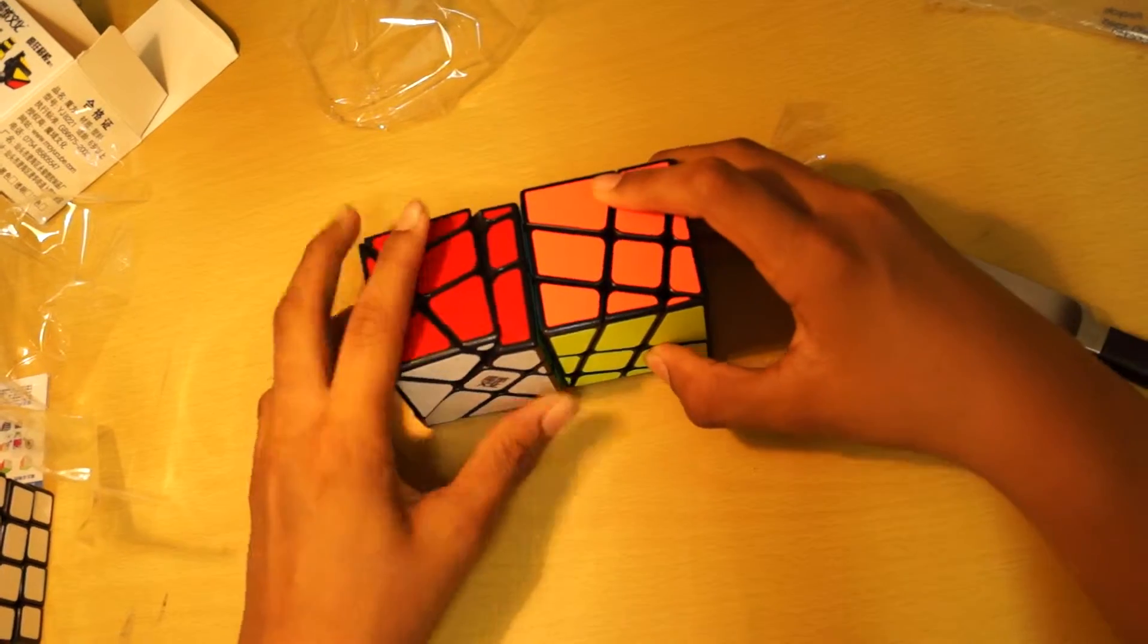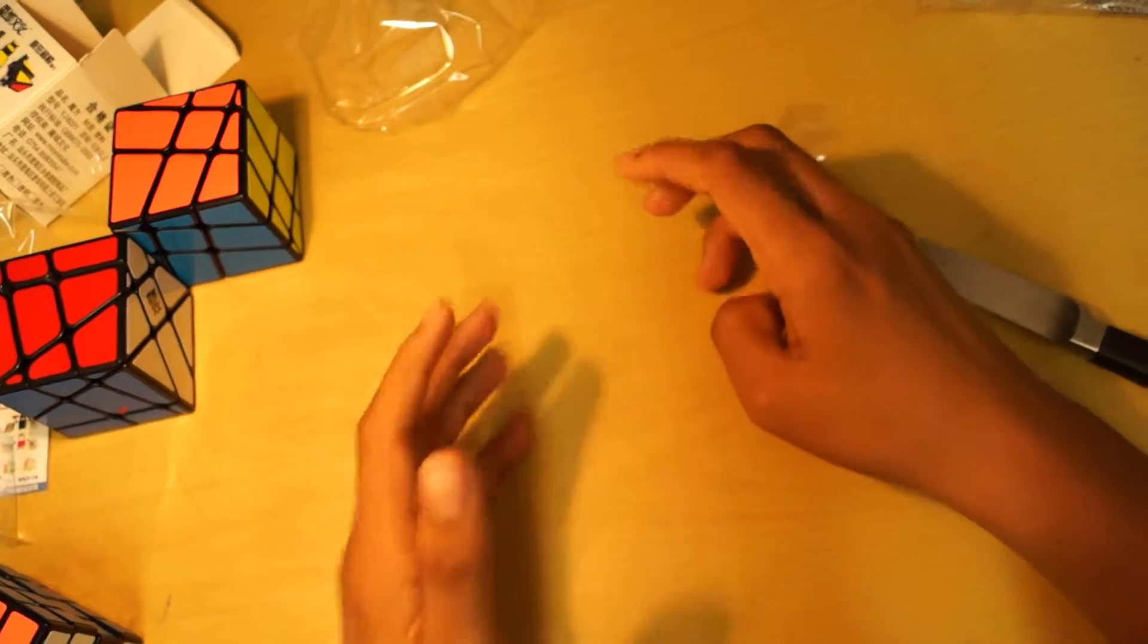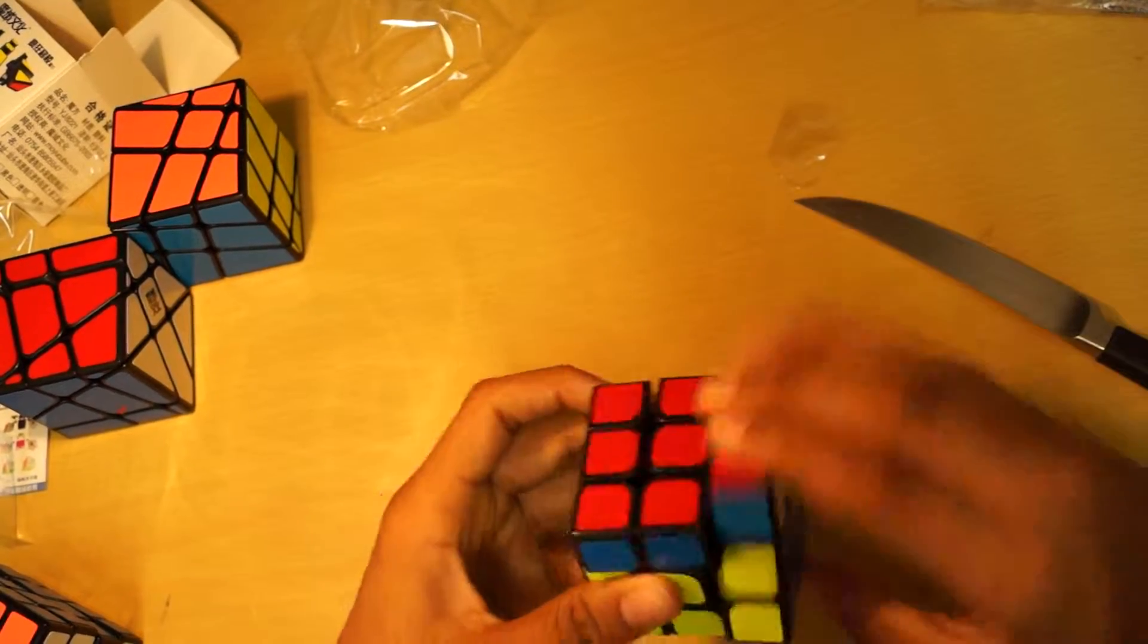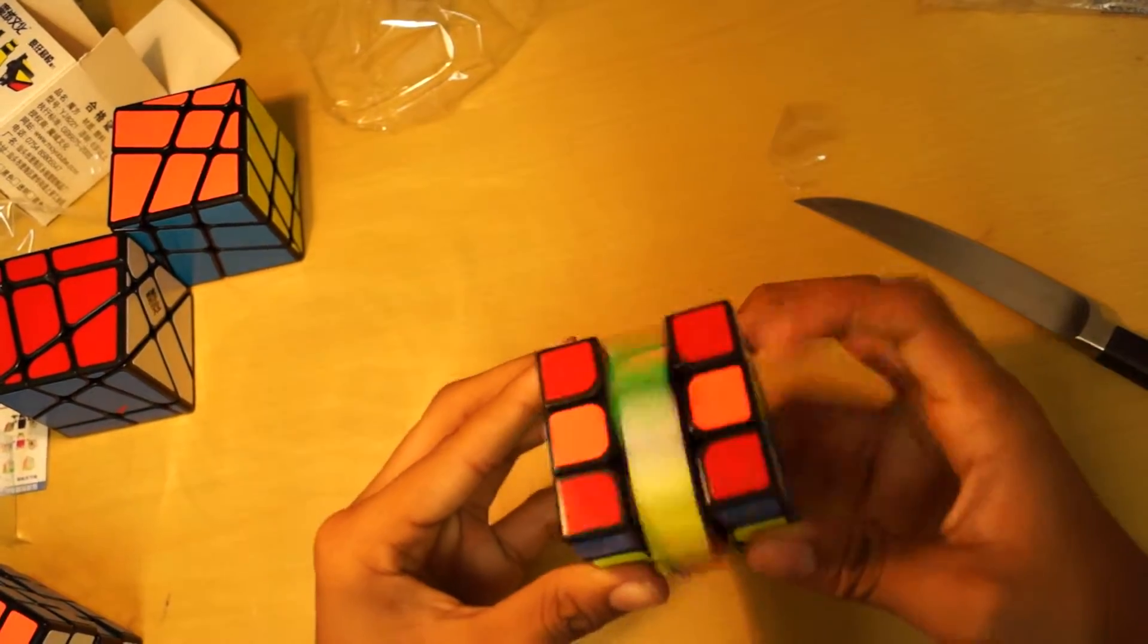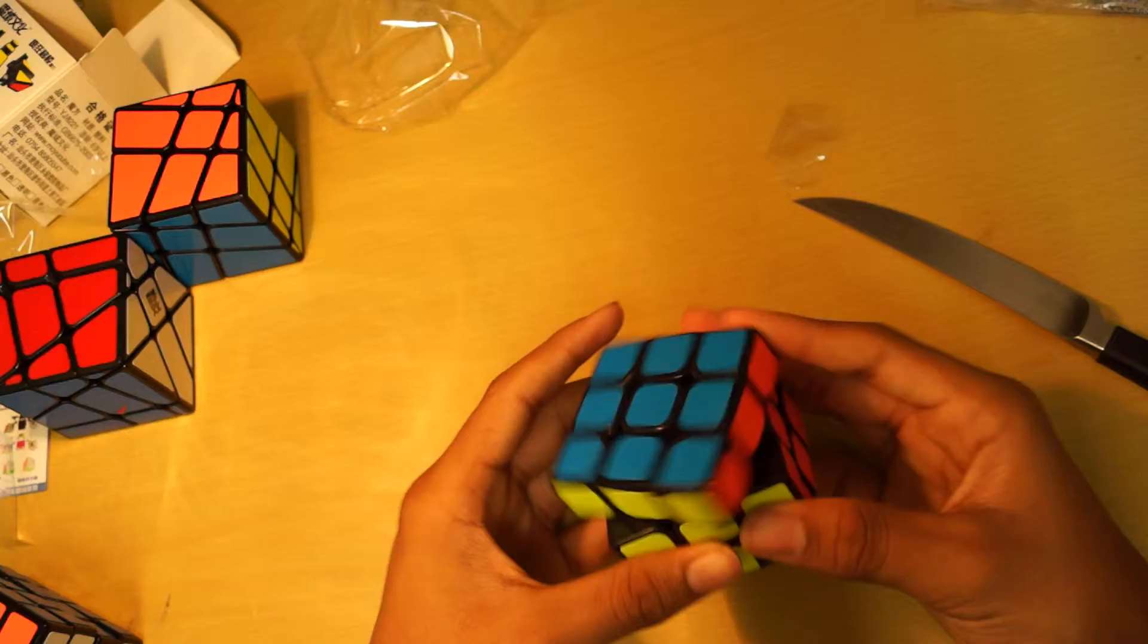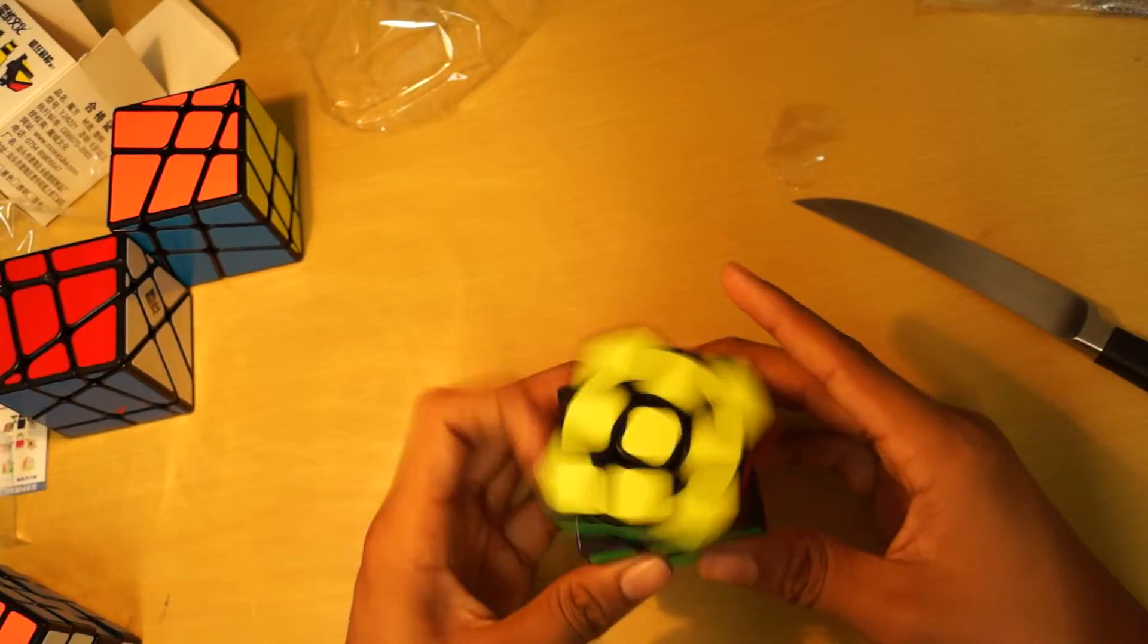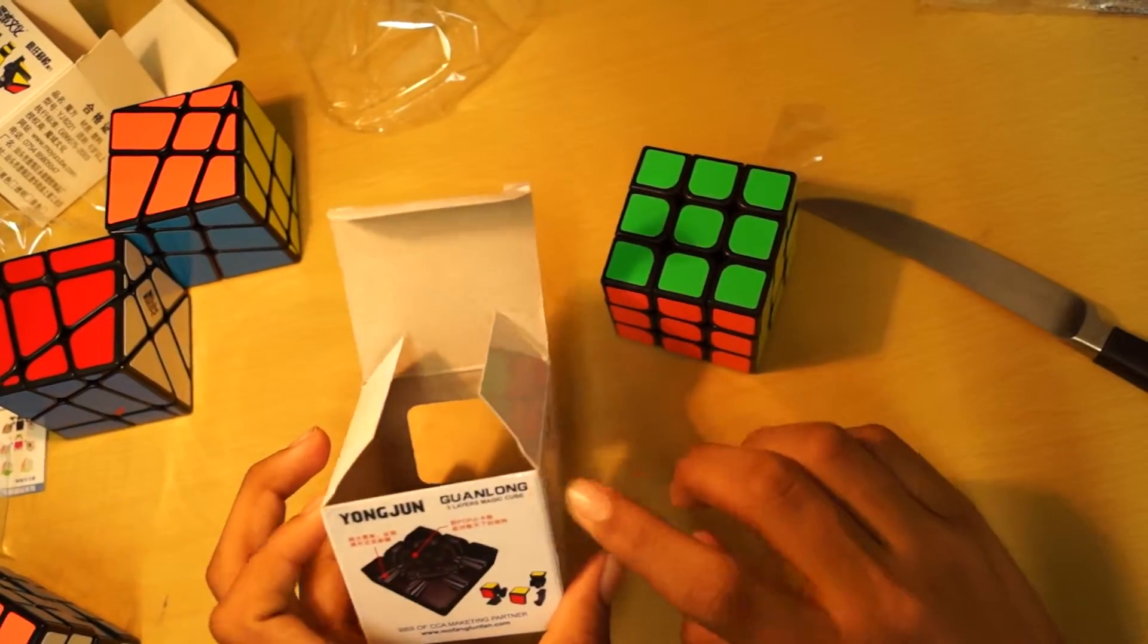Those are the two Moyu shapeshifting cubes. And here is the Guanlong, which is very light. I can literally... I don't know why it's really light. It's almost as light as my Guanying. And it seems pretty good if you ask me. It's not going to be my main, definitely not. But it's definitely nice to keep in my collection. I think I have another Guanlong coming in from the cubicle. I don't know. I thought I ordered a Sulong, but I think I ordered a Guanlong probably because the box is Guanlong.